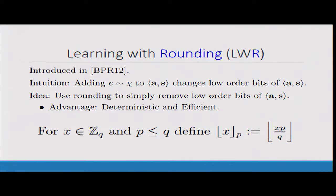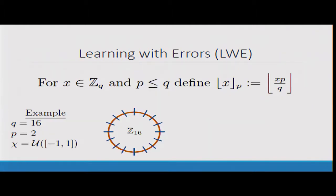So to that end, let's define this rounding function. It's for inputs from ZQ, parameterized by an integer P which is less than Q. Pictorially, it's easier to understand with an example. Here we have Z16 represented as a circle, and we're going to round for P equals two.